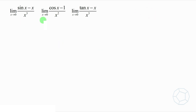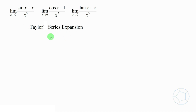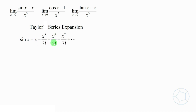First of all, let's look at the structures of the limits. They come from the Taylor series expansion. Let's take sine x as an example. Sine x is equal to x minus x cubed over 3 factorial plus x to the power 5 over 5 factorial minus x to the power 7 over 7 factorial plus dot dot dot.